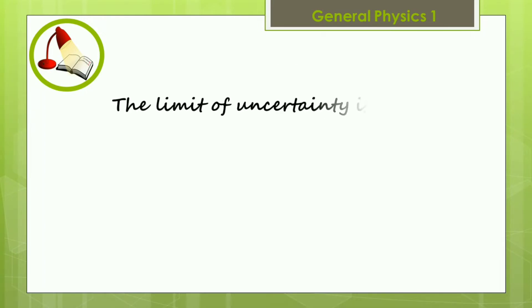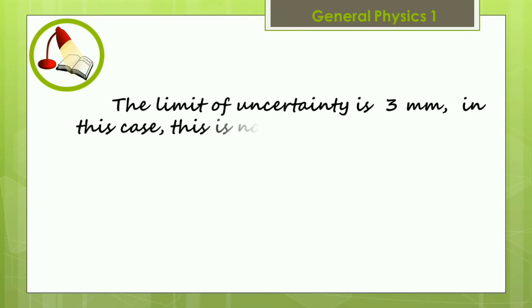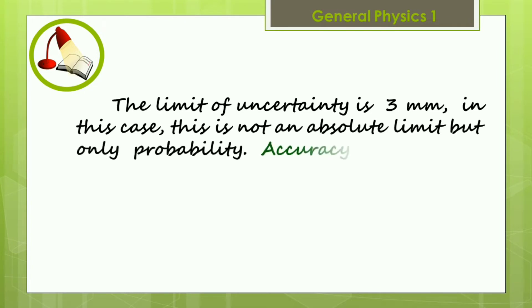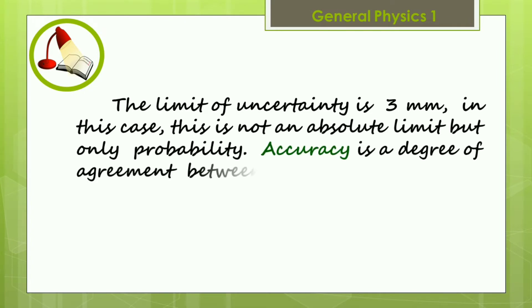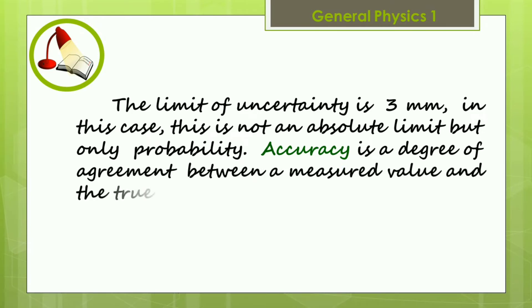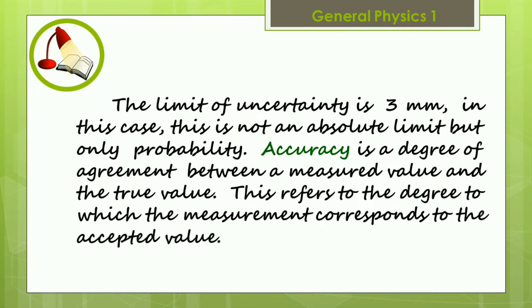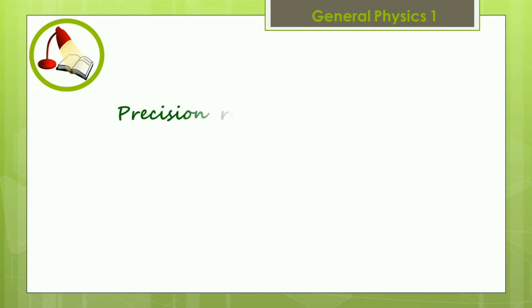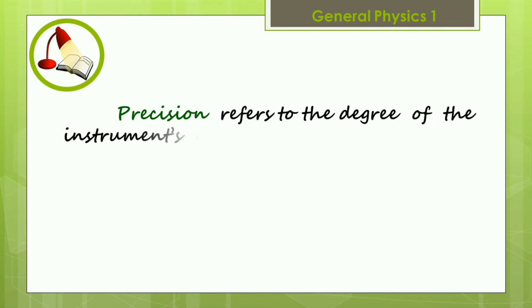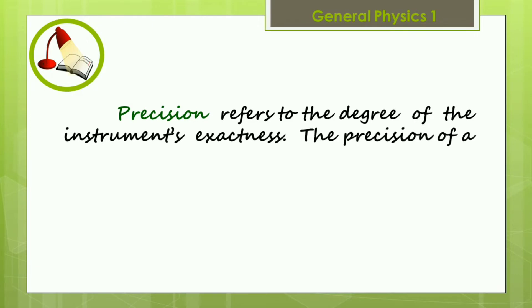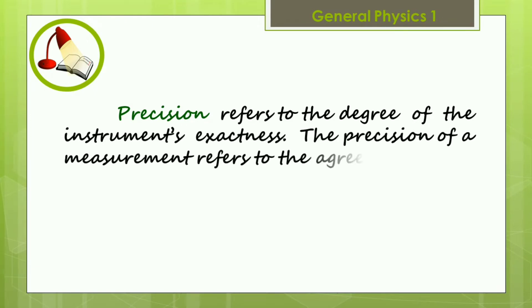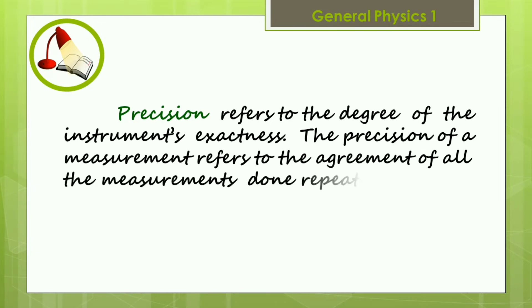The limit of uncertainty is 3 millimeters. In this case, this is not an absolute limit but only a probability. Accuracy is the degree of agreement between a measured value and the true value. This refers to the degree to which the measurement corresponds to the accepted value. Precision refers to the degree of the instrument's exactness. The precision of a measurement refers to the agreement of all the measurements done repeatedly in the same manner.